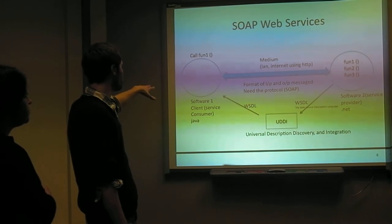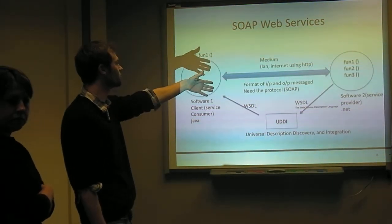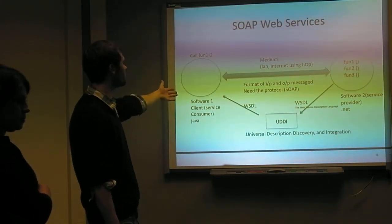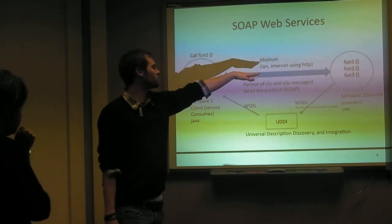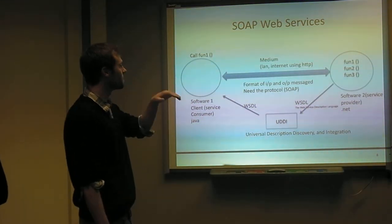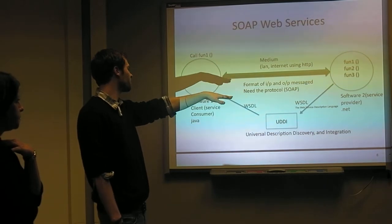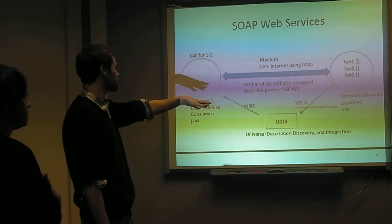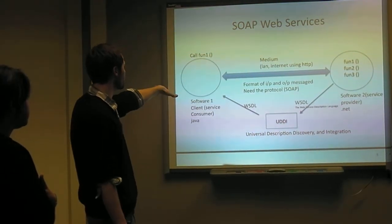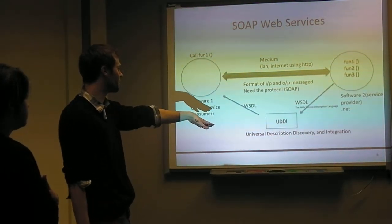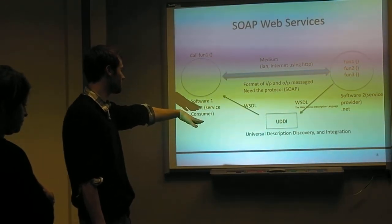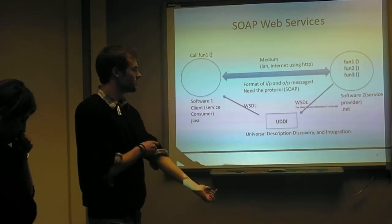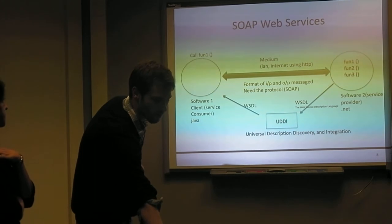Software one sends a request over to software two and calls one of its functions. This is just like the internet or some way to transfer over HTTPS. Software two executes one of the functions and outputs WSDL, which stands for Web Service Description Language. It can go straight back to server one, but there could be an intermediary — in this case, a Universal Description Discovery and Integration library — which would send WSDL back to software one.